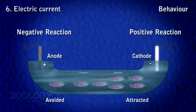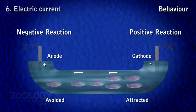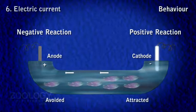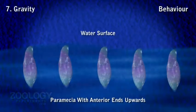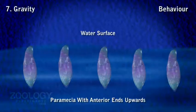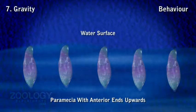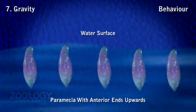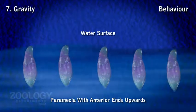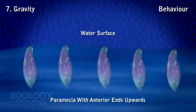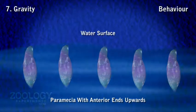Response number seven is to gravity, called geotaxis. They show negative response to gravity. When Paramecia are introduced in an inverted water-filled U-tube stoppered at both ends, they immediately move upward into the horizontal part of the tube. When moving across the tube and finding their path going downward, they reverse the direction of movement.